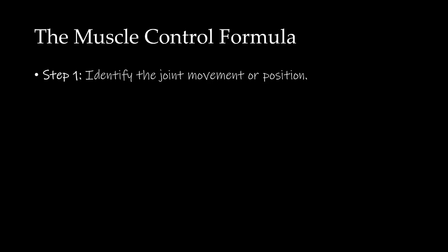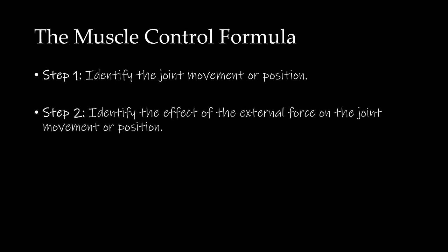Let's review what we did in this video. Step 1 was to identify the joint movement or position, and we identified it as horizontal ADduction or horizontal flexion. Step 2 was to identify the effect of the external force on the joint movement or position, and we determined that the effect of gravity was to rotate the arm downward.